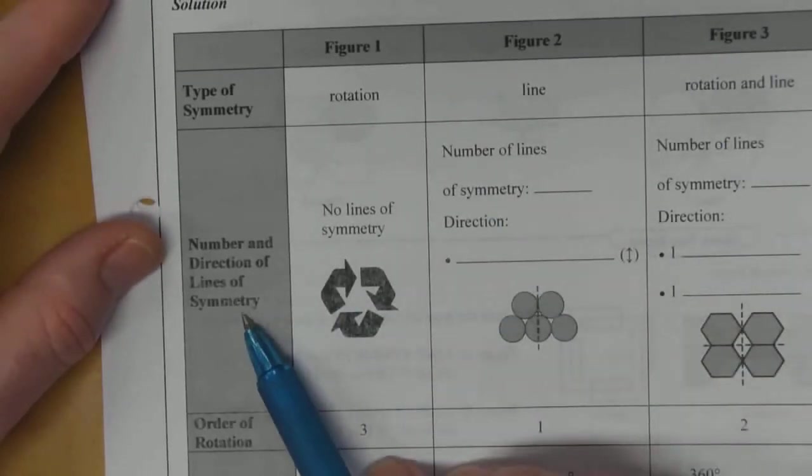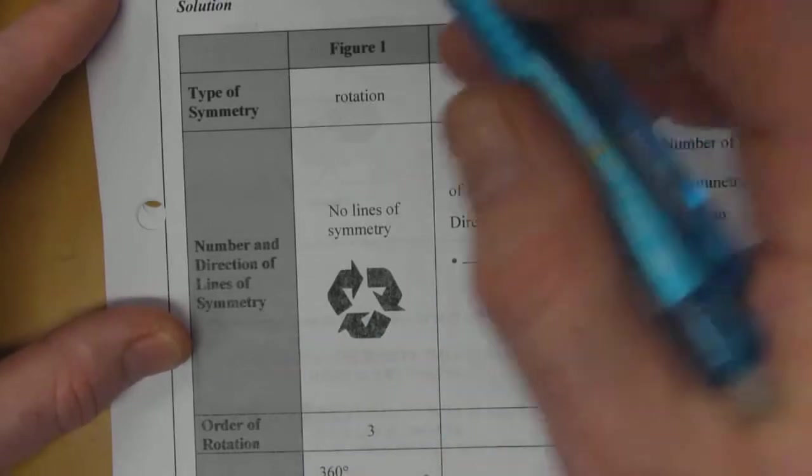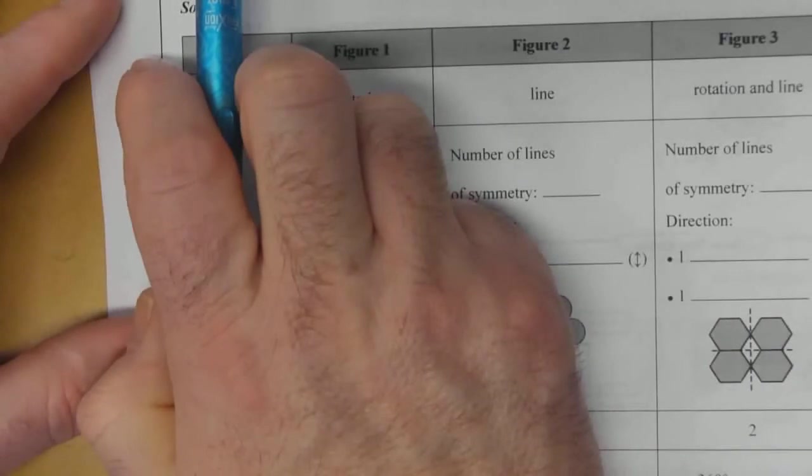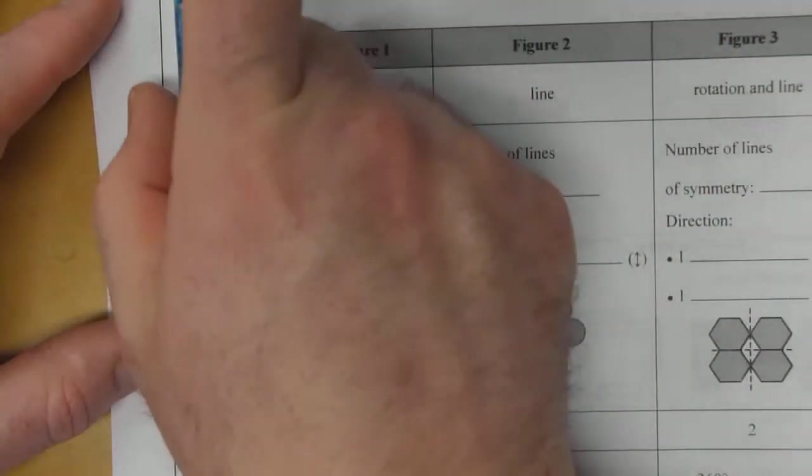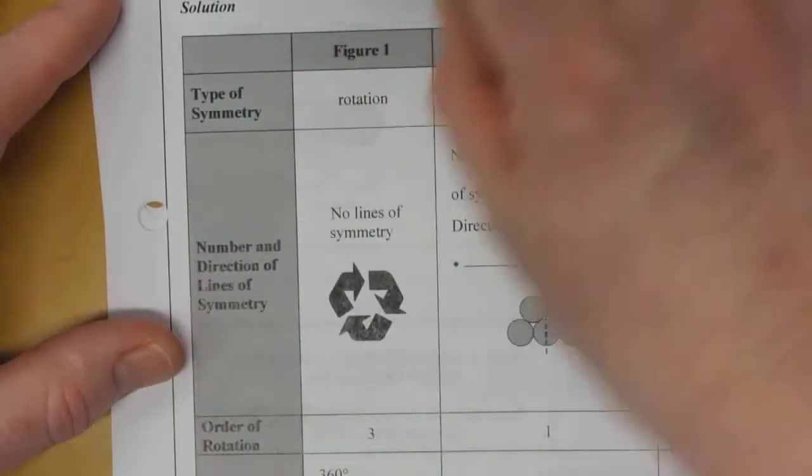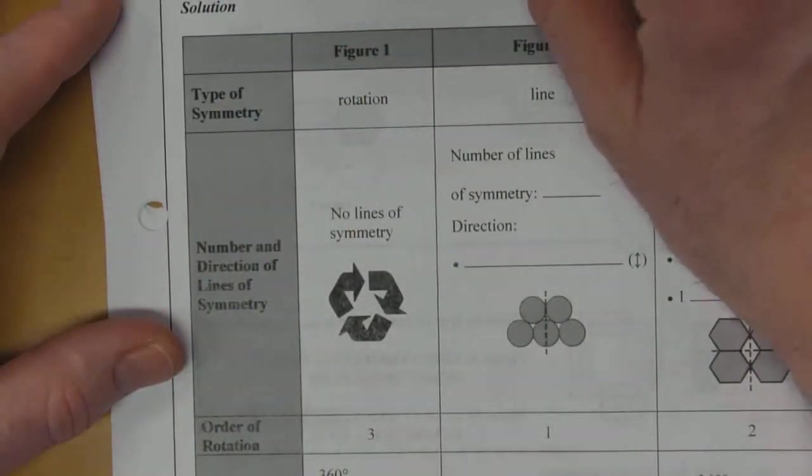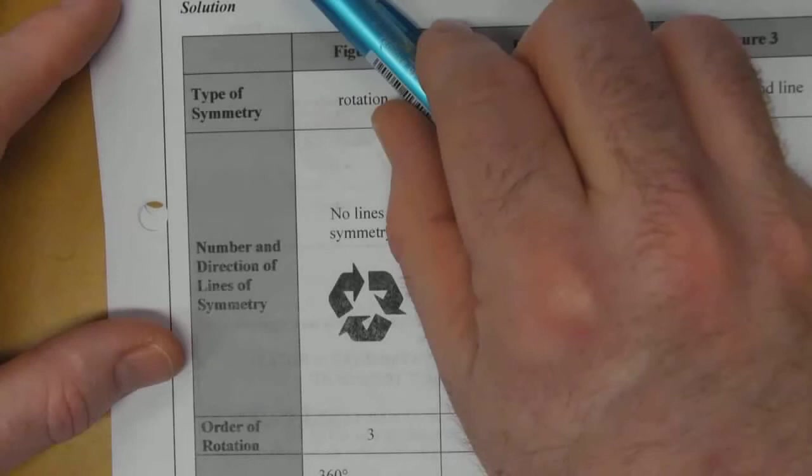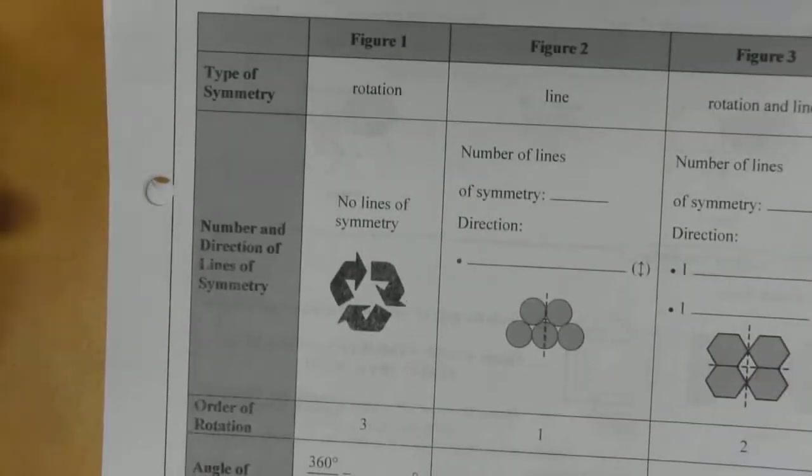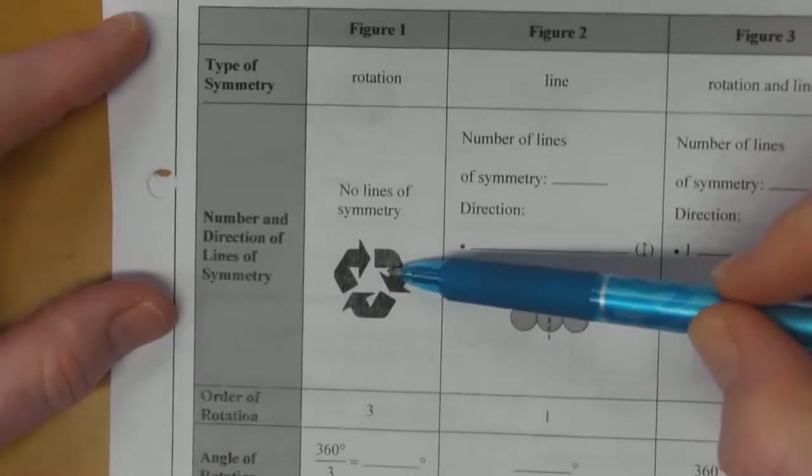For Figure 1, looking at number and direction of lines of symmetry: the arrows are pointing clockwise. If you cut it in half vertically, the two sides don't match. Horizontally, the two sides don't match. Diagonally or obliquely, there's no line of symmetry in this particular shape.